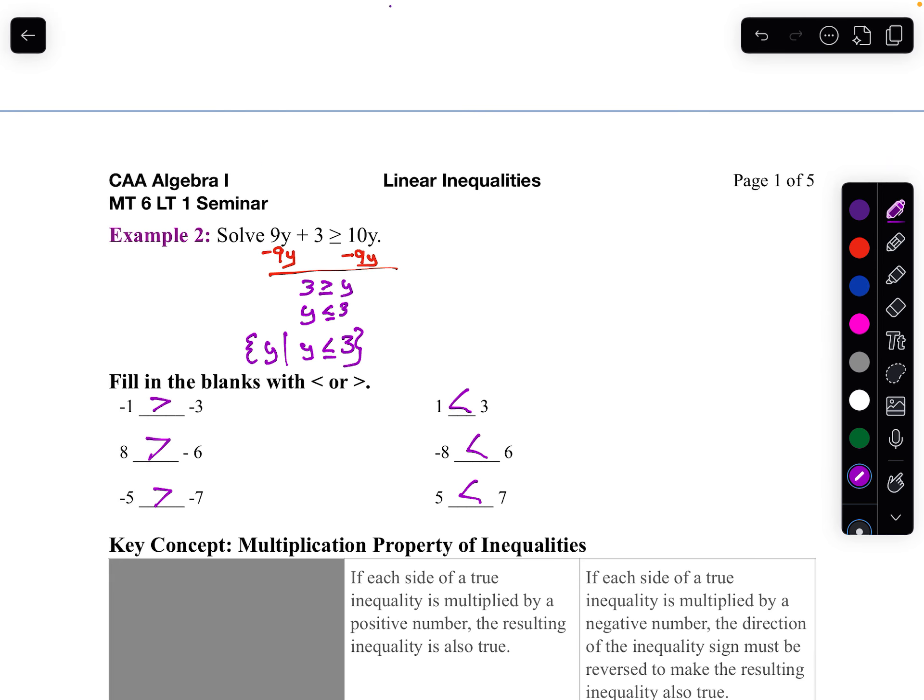Now, notice the pattern here. The second column is opposite of the first column, isn't it? I've got the same numbers, but they're just opposite of what they were. And since they're opposite of what they were, notice my inequality flipped too.